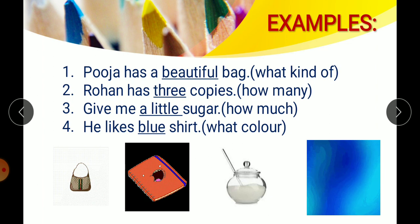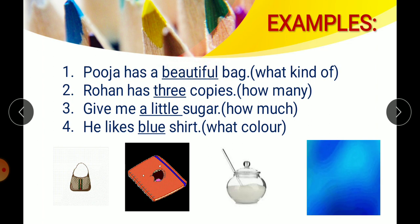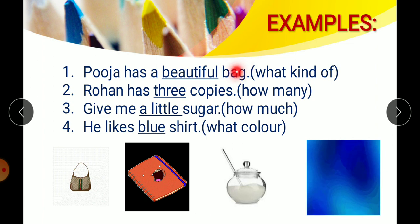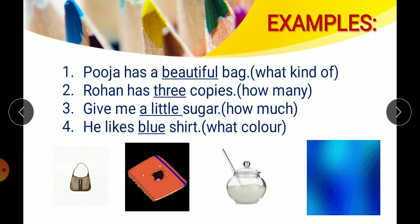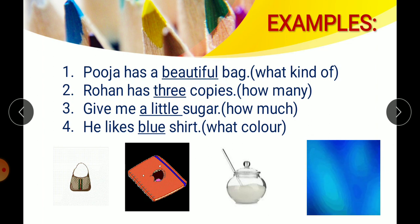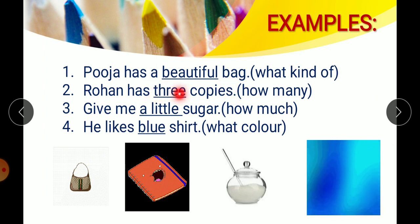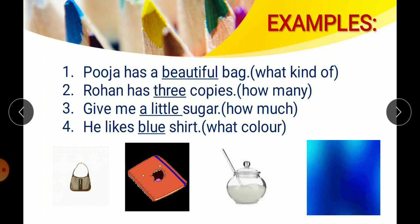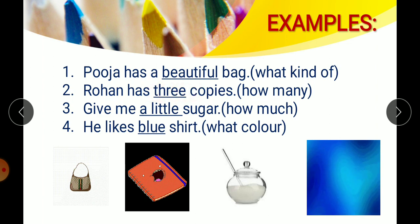Coming to examples. Pooja has a beautiful bag. Here, the word 'beautiful' is an adjective because it is telling us about what kind of bag Pooja is having. Rohan has three copies. How many copies? Three. So, the word 'three' is describing the copies — the number of copies Rohan is having. So, the word 'three' is an adjective.